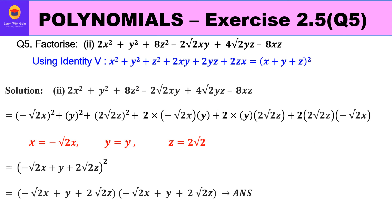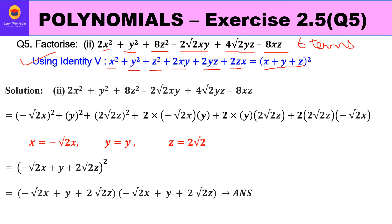Now the second part: factorize 2x² + y² + 8z² − 2√2·xy + 4√2·yz − 8xz. This product has six terms, so we again use Identity 5. The first term is 2x². Now 2 is not a perfect square, but √2 × √2 = 2, so 2 = (√2)², meaning 2x² = (√2·x)².